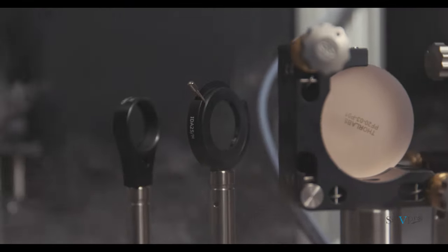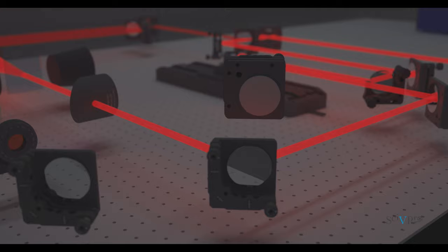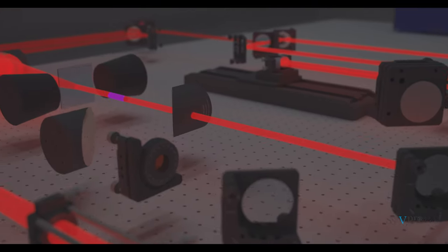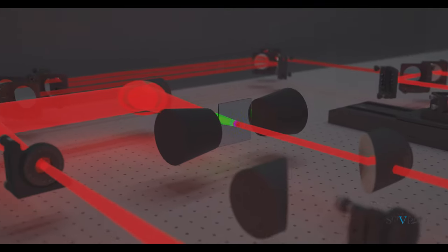After being delayed, the pump can take two different paths. In the first configuration, or emission mode, the pump hits the sample directly.